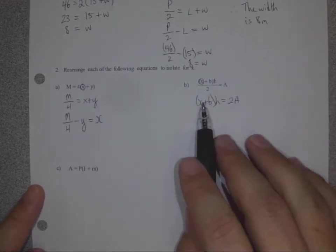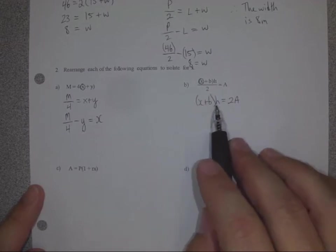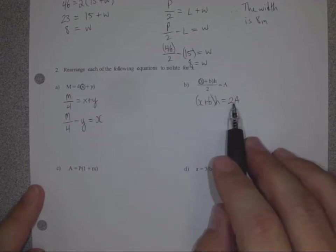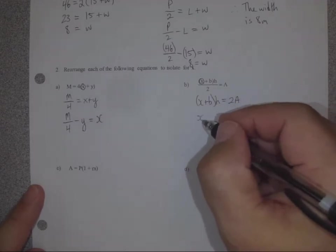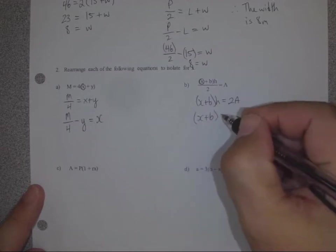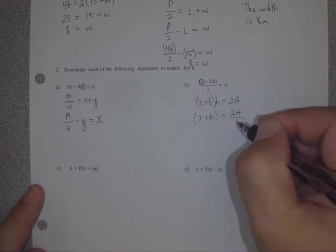So right now I have x plus b in brackets times h equals 2 times a. Next thing I'm going to do is get rid of this times h by dividing both sides by h. x plus b is equal to 2a over h.